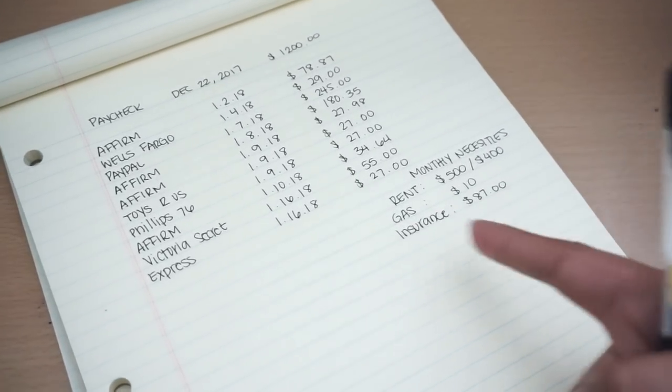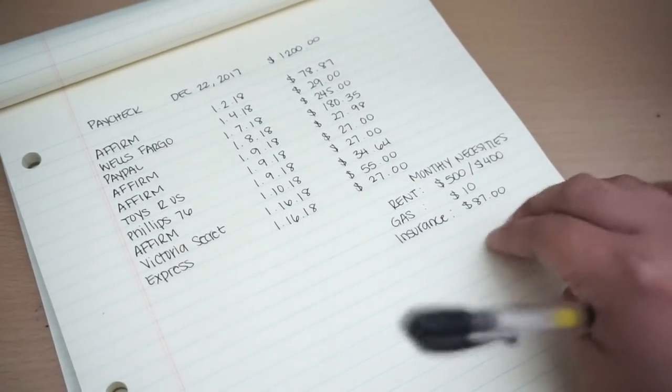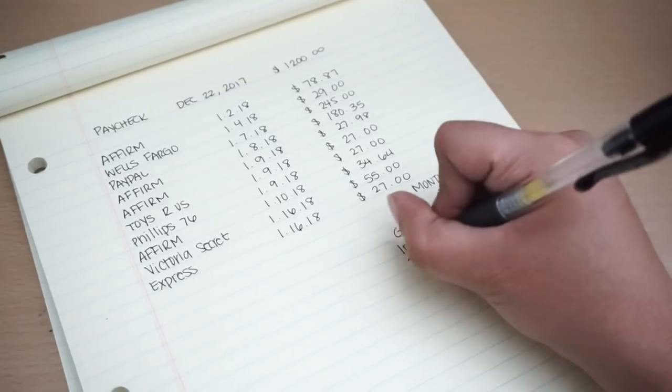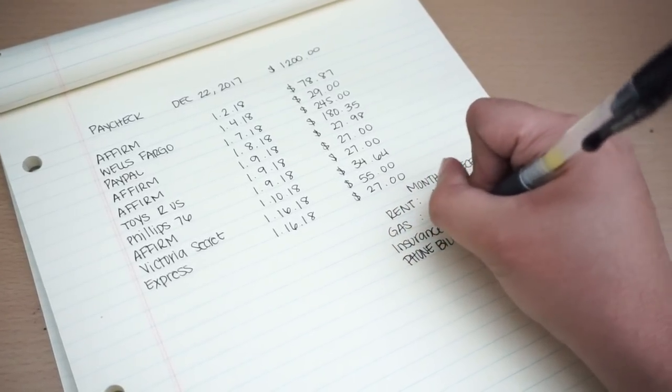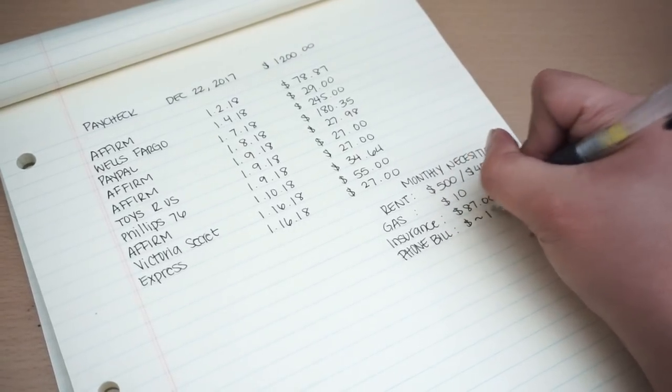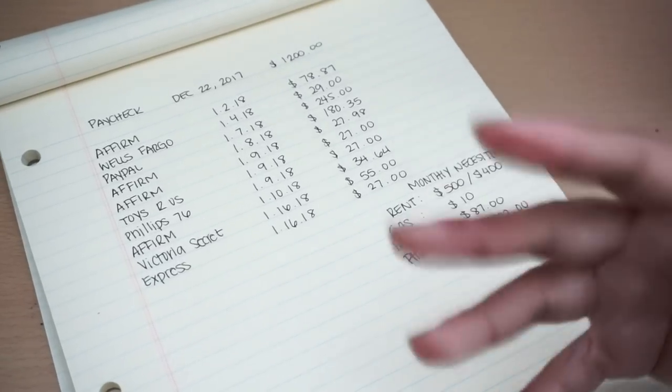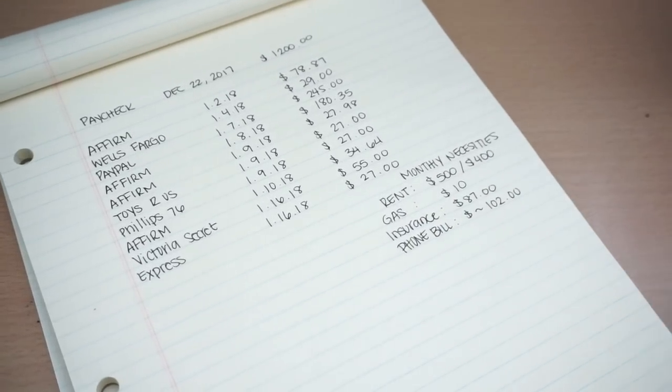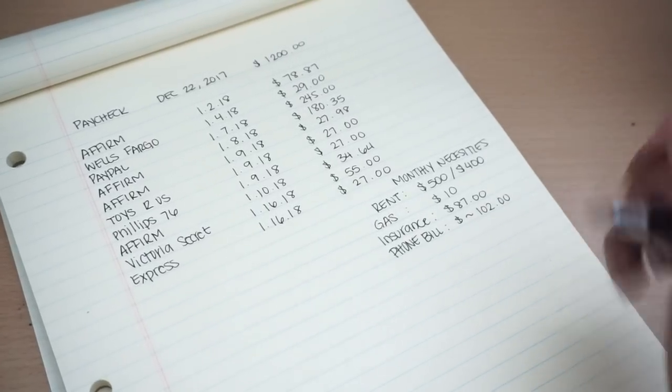Those are my monthly necessities. This is gonna get taken out before any of this. My phone bill. I've been trying to get out of my Sprint. And this is always estimated at $102. It always varies like $100, $101. But it's always like $102. Most I've gone is $103, but $102 is always by maximum. That's just in case I pay it late.